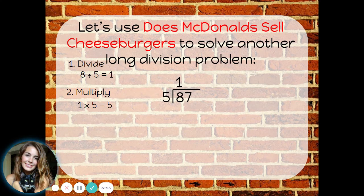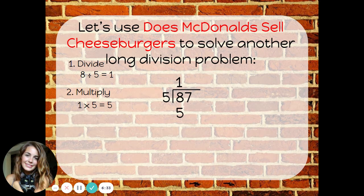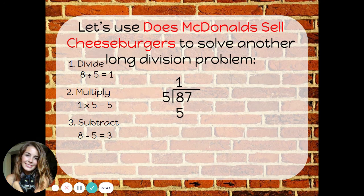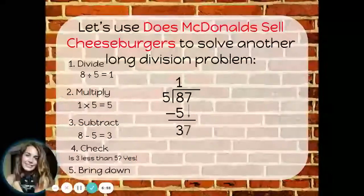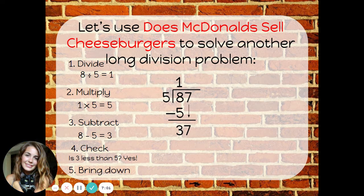Now I need to multiply. The number I just wrote, 1, times the divisor, 5. 1 times 5 is 5. That goes underneath because the next step is to subtract. Now I have my numbers lined up and ready to subtract. 8 minus 5 is 3. We've just been ignoring the 7 so far — we'll get to it soon. Check: is 3 less than 5? Yes. Then bring down the next number. Here's where the 7 comes into play. We bring it down to sit right next to the 3, creating a new number, 37.